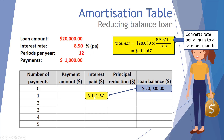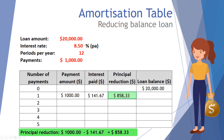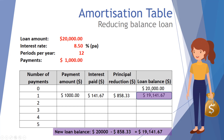The interest charged after the first month on twenty thousand dollars at eight point five percent per annum compounding monthly is one hundred and forty one dollars and sixty seven cents. She then makes a payment of one thousand dollars. Of that thousand dollars, one hundred and forty one dollars and sixty seven cents is used to pay interest, leaving eight hundred and fifty eight dollars and thirty three cents to actually reduce the principal.